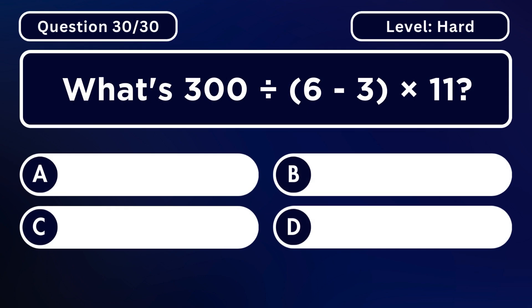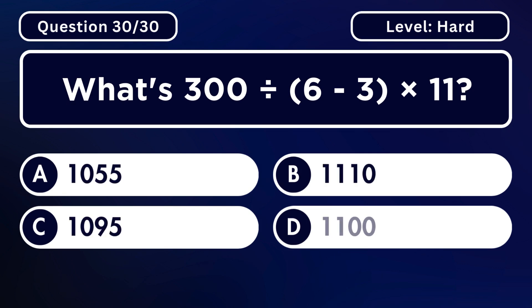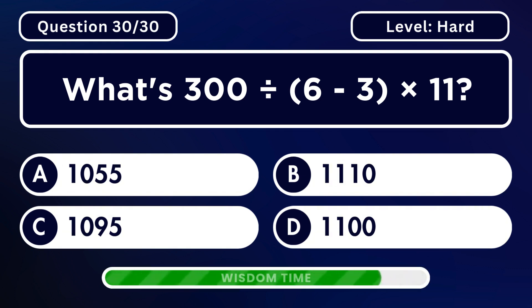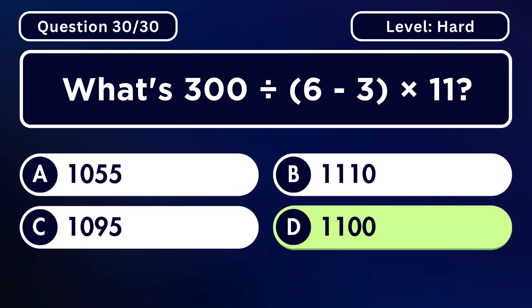What's 300 divided by the difference of 6 and 3 multiplied by 11? Answer D. 1,100.